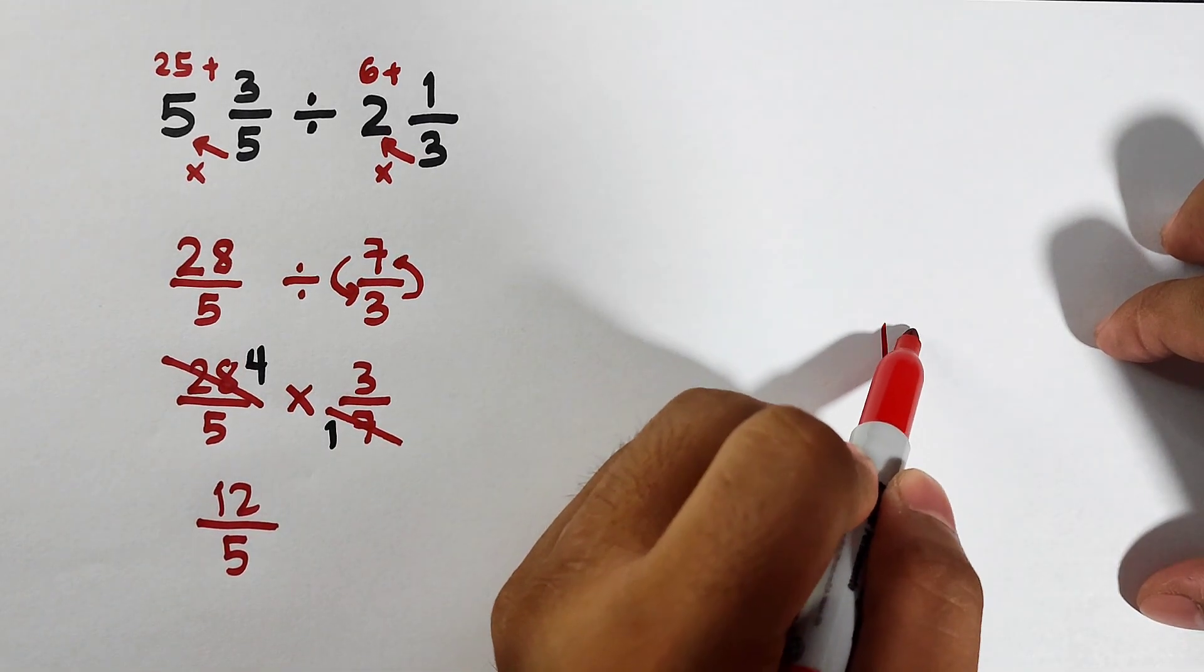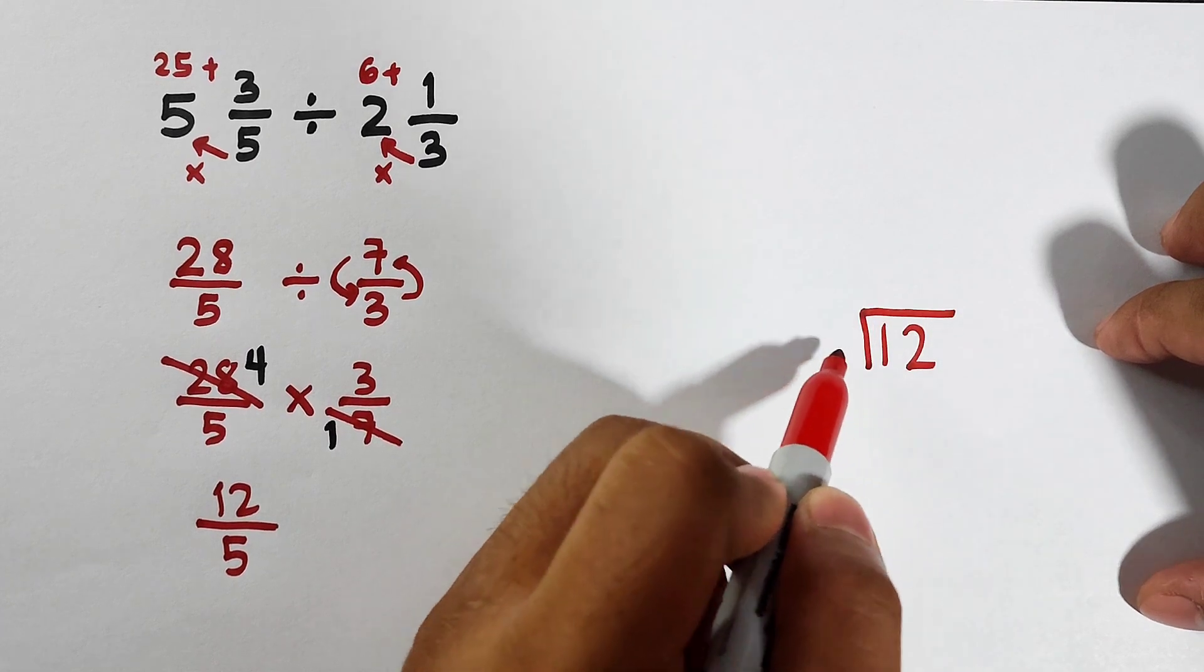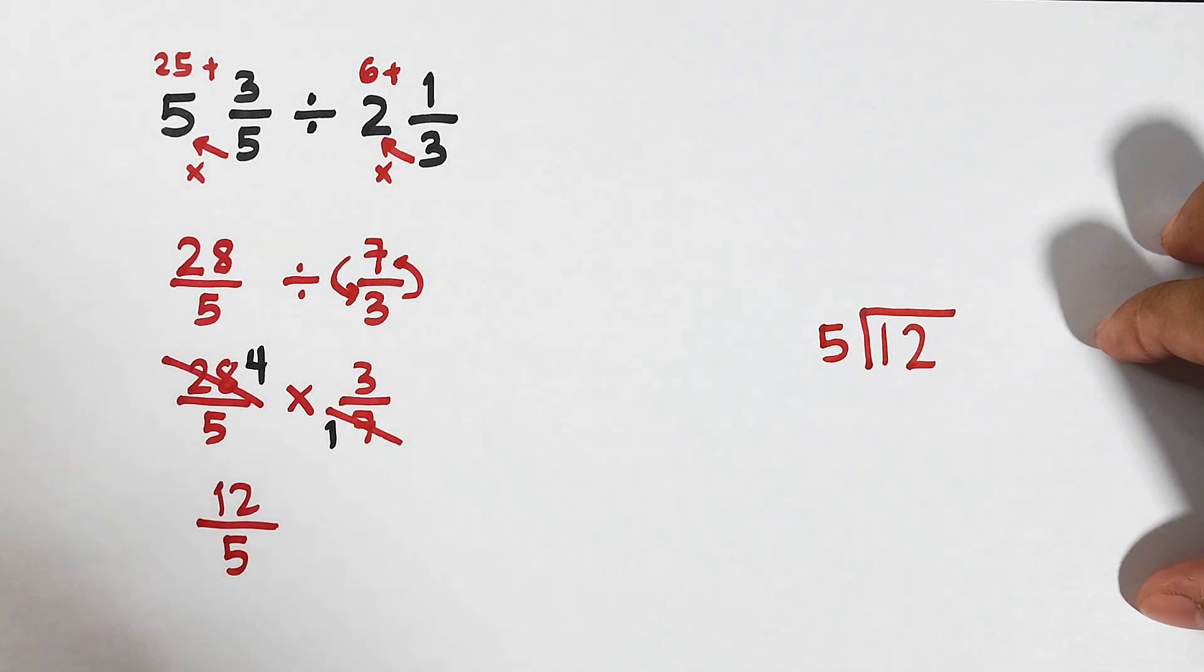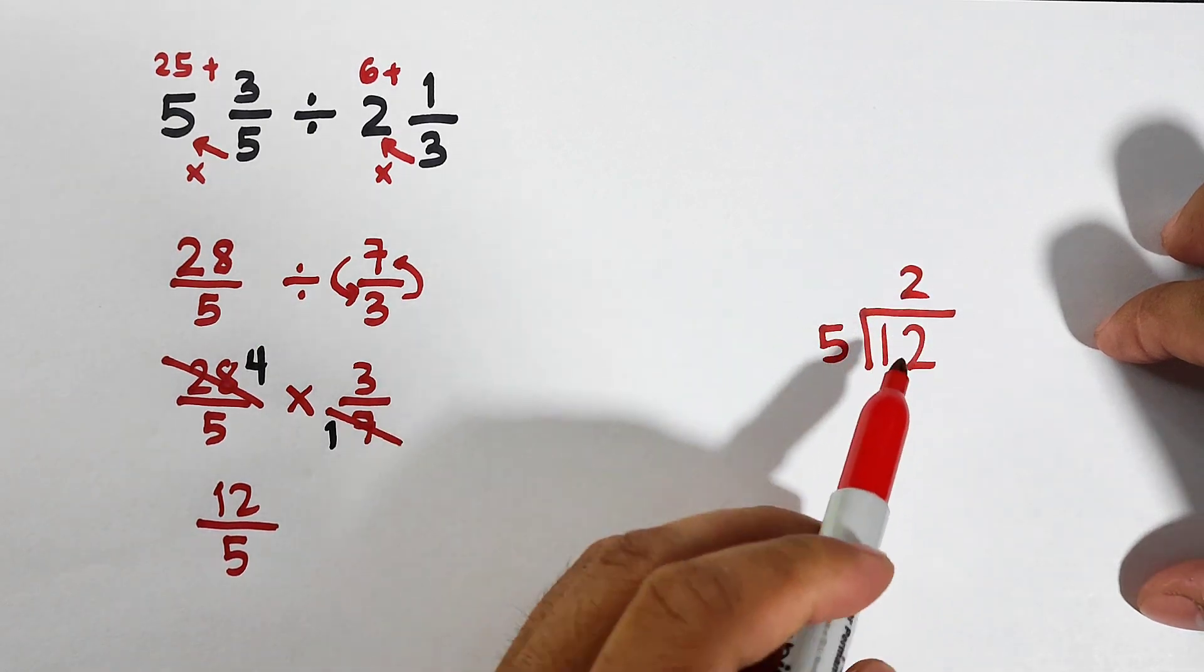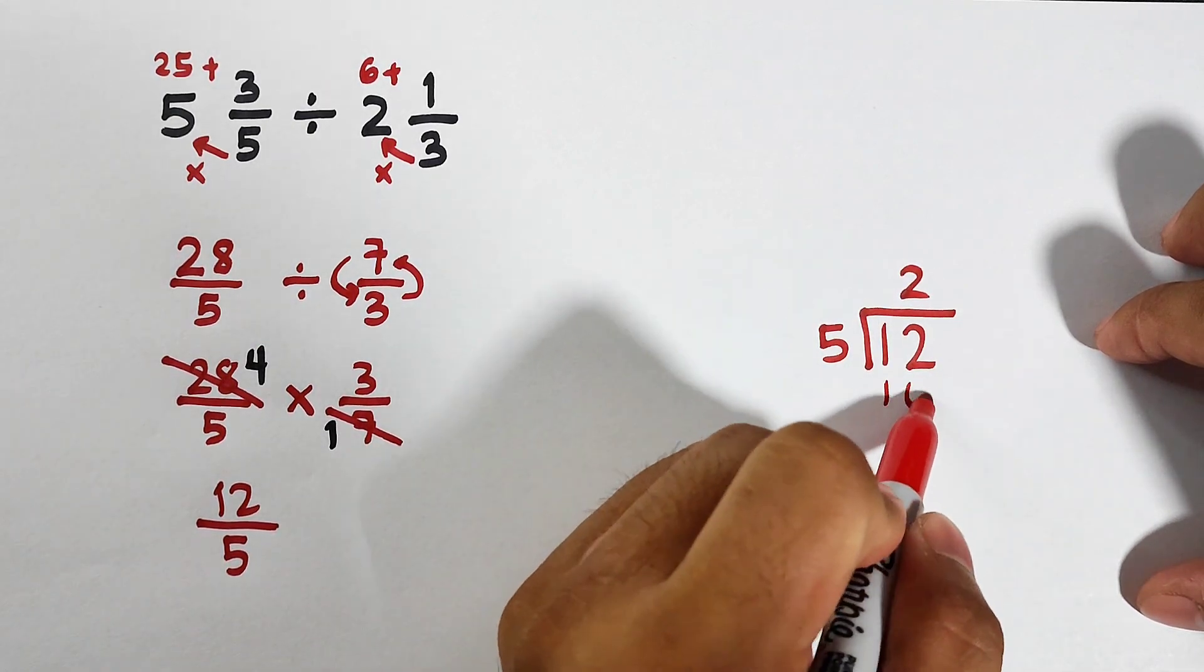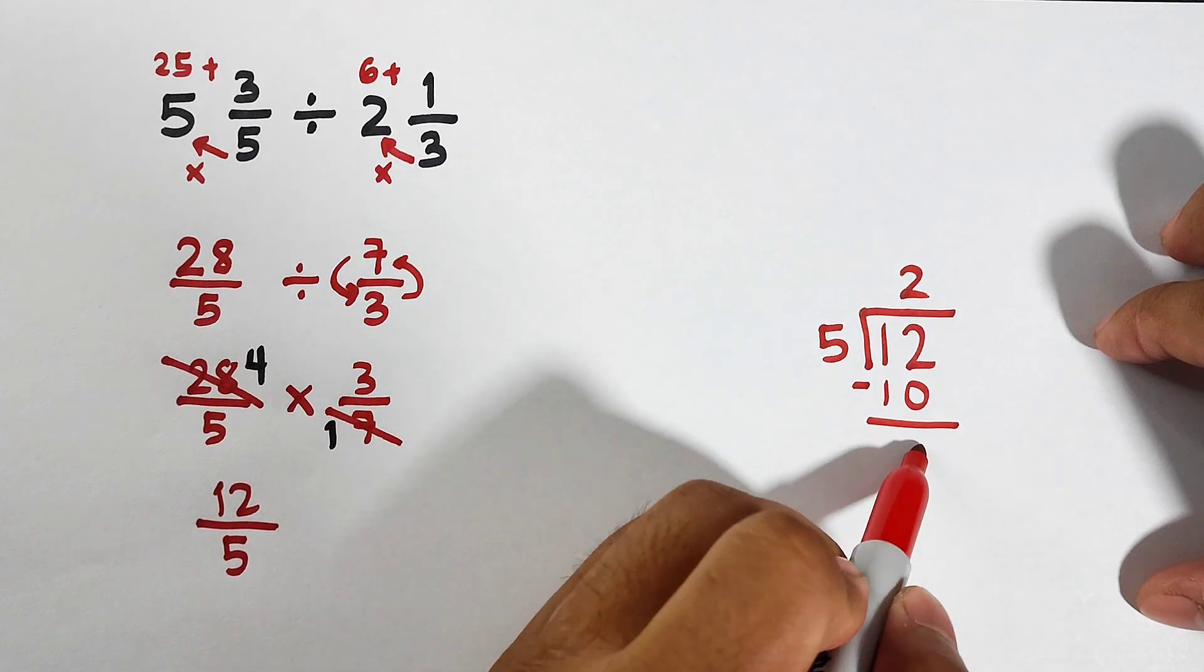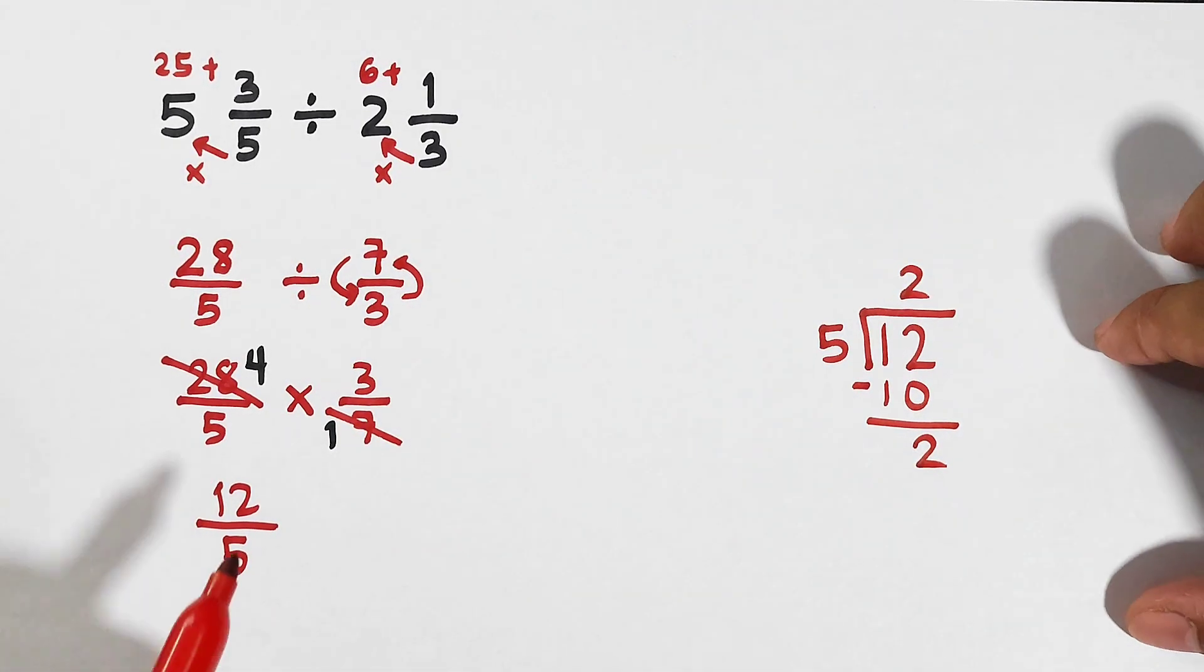Let us divide 12 by 5. 12 divided by 5 is 2. 2 times 5 is 10. Subtract this, this is equal to 2. Now what is the answer?